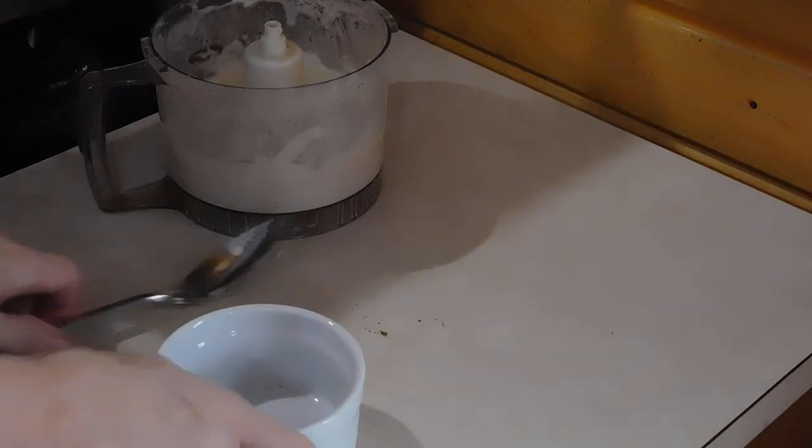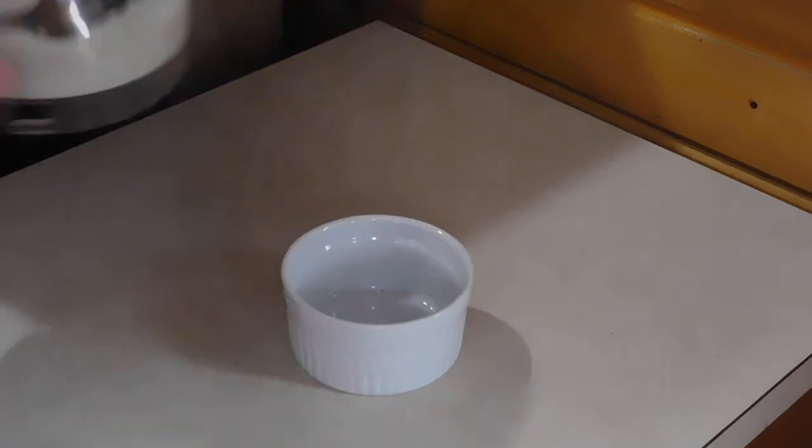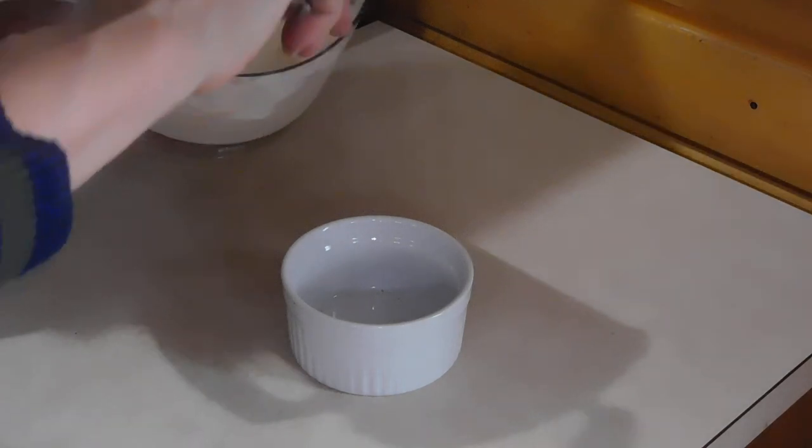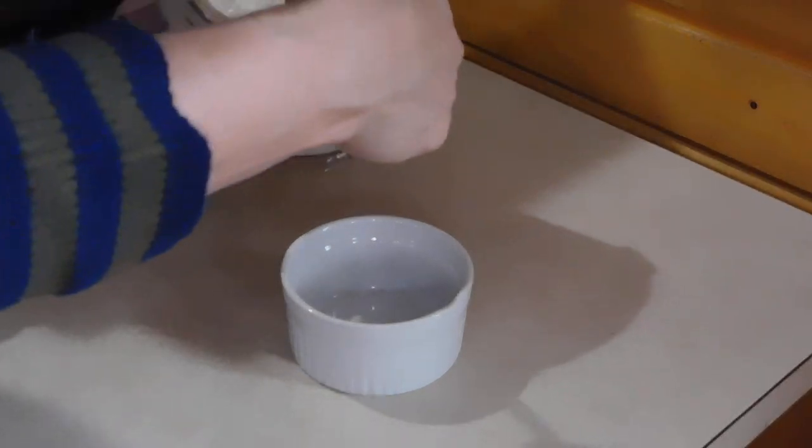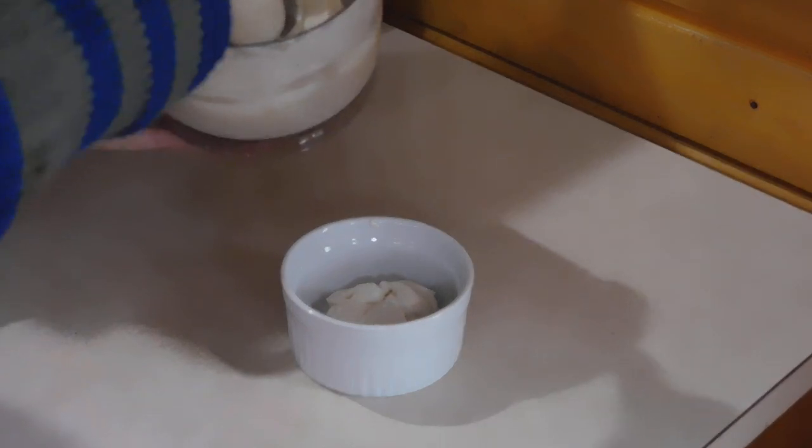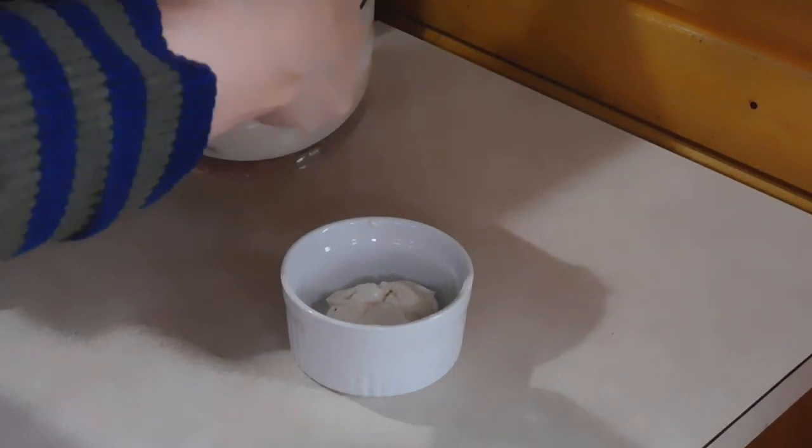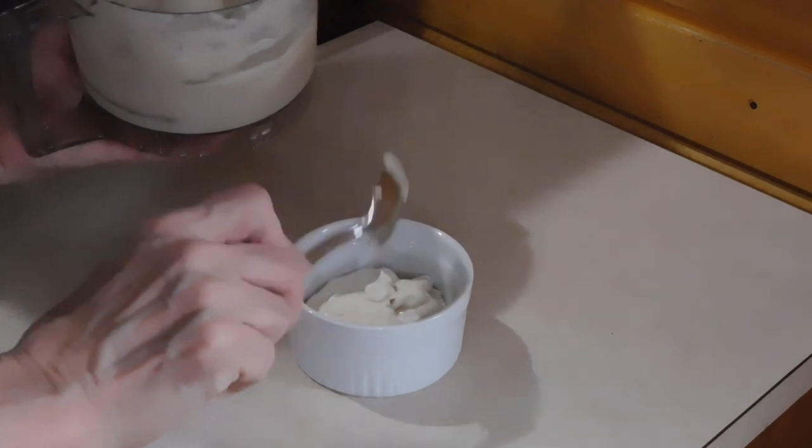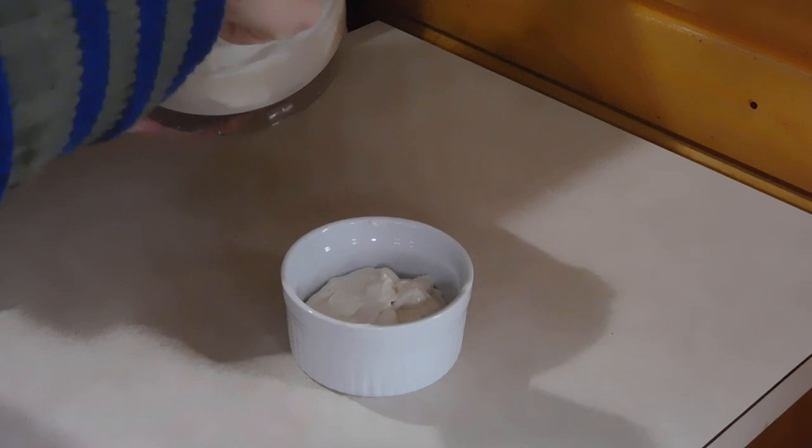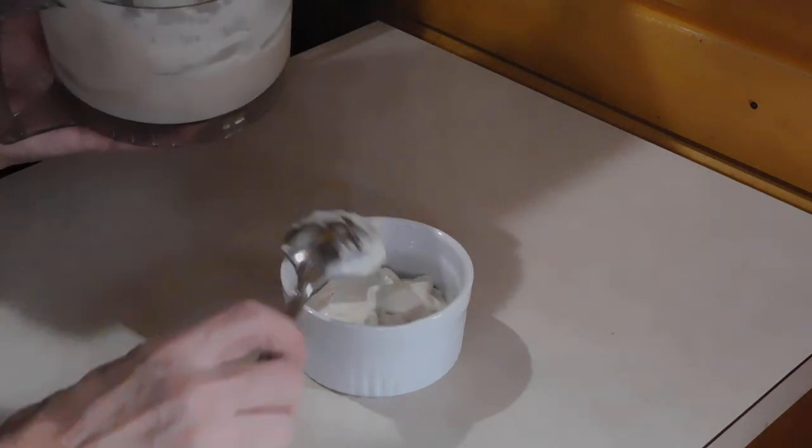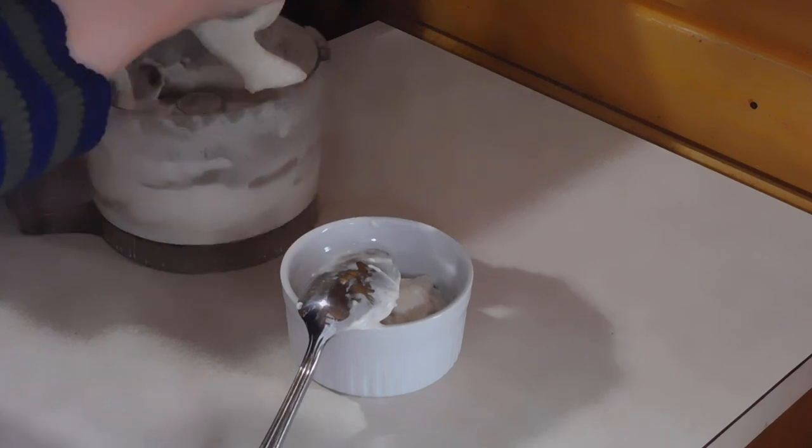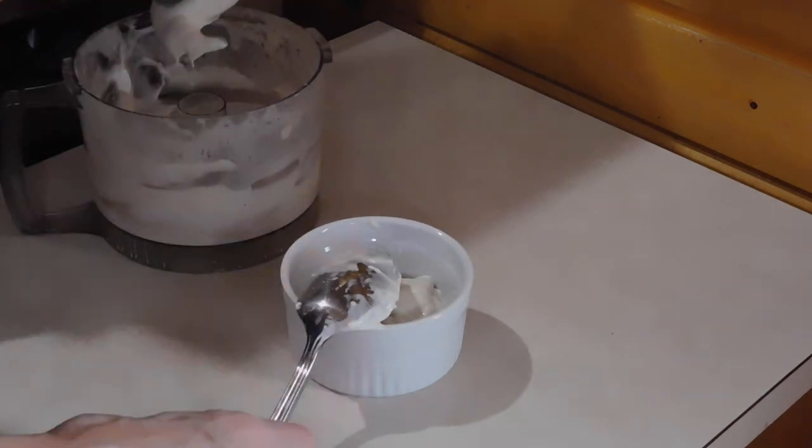So mayonnaise is usually made with eggs. Some people really need to be careful of how many eggs they consume. And so this is a really nice substitute for egg mayonnaise. So can you make mayonnaise with eggs at home? Yep. And you can find plenty of recipes on the internet. You just basically do the same thing we did. But you'll use eggs.